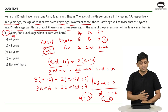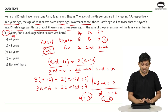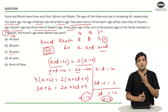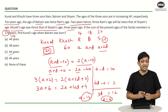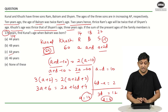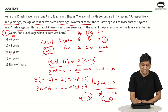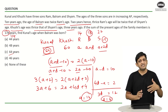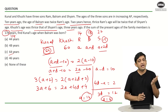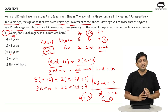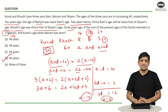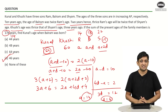Balram is 18 years old today, so Kunal's age 18 years ago was 64 minus 18 equals 46 years. The correct answer is option D, 46 years.